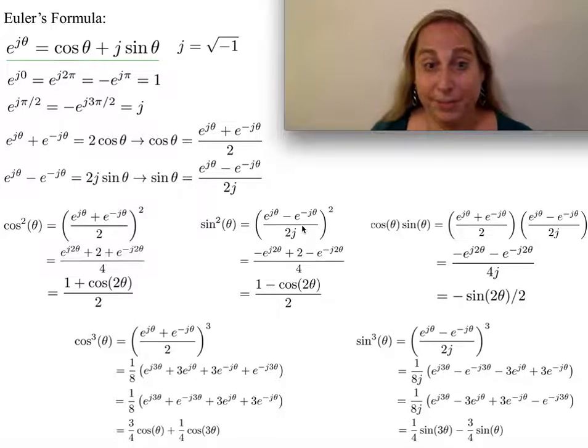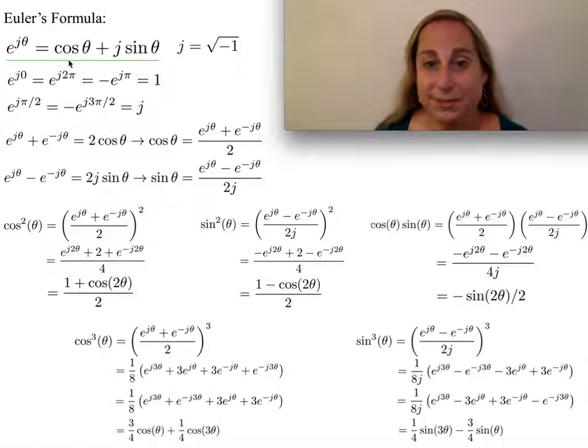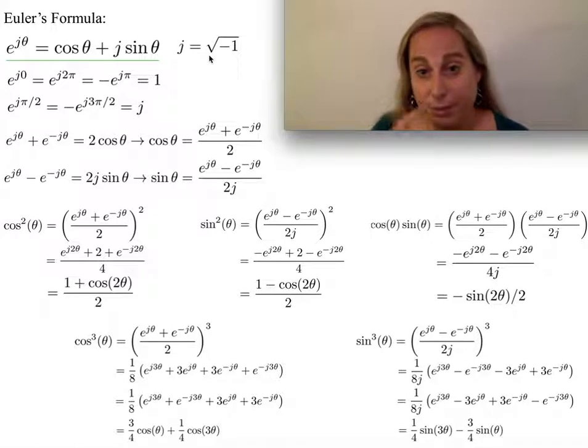When one looks at Euler's formula, in particular this Euler's formula for an exponential, we often see it as a cosine plus a j sine, and this is something that can be derived. But it often just kind of seems like, what's the point of this interesting formula? And so, remembering that j is, in fact, the square root of minus one.